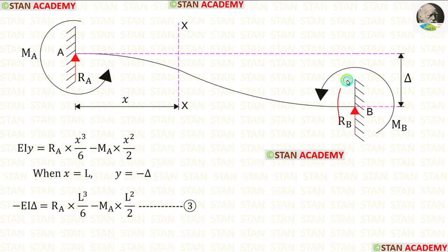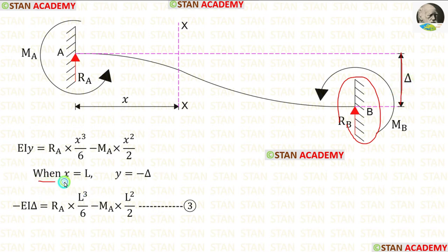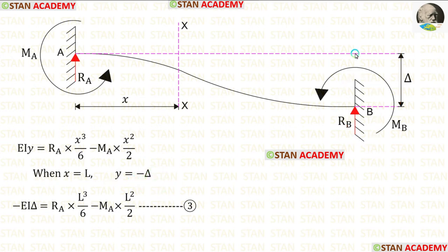The support B is sinking. It is sinking at the depth of delta. So, when x is L, the deflection y is delta.